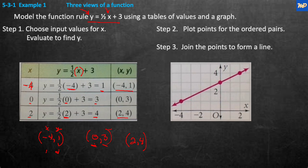Now look at the graph. We fit the numbers so we can pick up our data — we have x from -4 to positive 4. The first point is (-4, 1): go to -4 on the x-axis, then up 1. The next is (0, 3): go to 0, then up 3. The last is (2, 4): go to positive 2, then up 4. They drew a nice straight line through all three points.